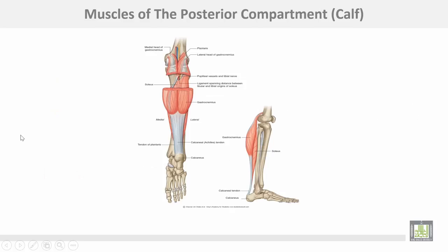These are the muscles of the posterior compartment — the gastrocnemius muscle and the soleus muscle.